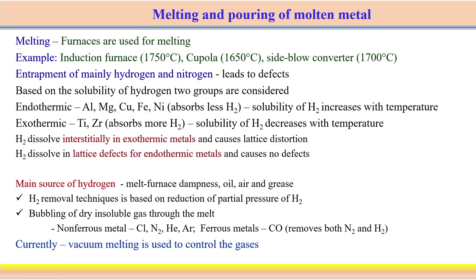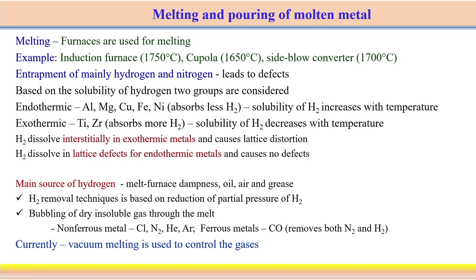Once we understand these very basic elements associated with a casting unit, the first step of the casting process is the melting of the material and pouring of the molten metal. Basically, in a large-scale structure, we usually use commercial furnaces available for melting purposes. For example, we can use an induction furnace, we can use a cupola, or we can use a side-blow converter — these are all kinds of melting furnaces. Each furnace has certain limitations. For example, an induction furnace can produce a maximum temperature of up to 1750°C. A cupola can reach up to 1650°C. And a side-blow converter can reach up to 1700°C. Therefore, just looking into the type of material and its melting point, we can choose the particular furnace to melt the metallic material.